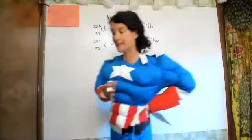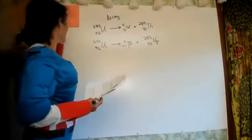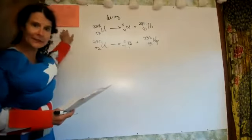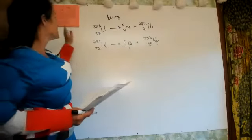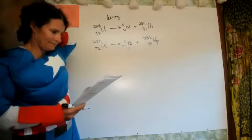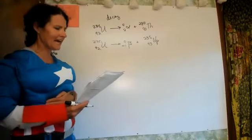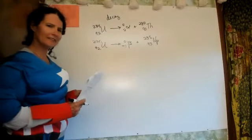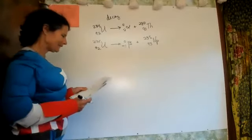The next planet after Uranus is Neptune, and element 93 is Neptunium. Uranium, Neptunium, and Plutonium were named in the order of the planets. Uranium the element was actually discovered about the same time the planet Uranus was found.